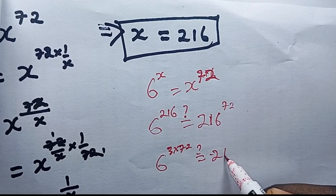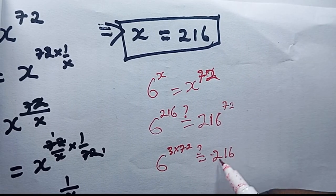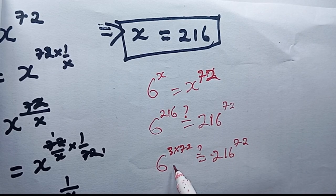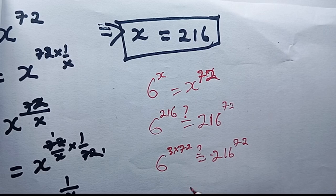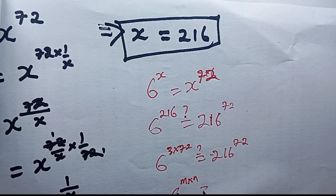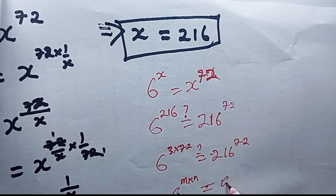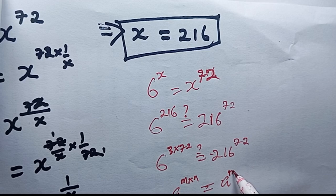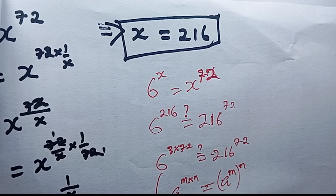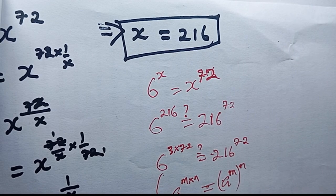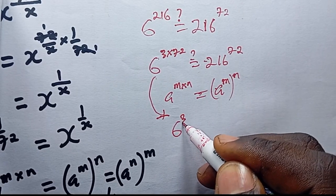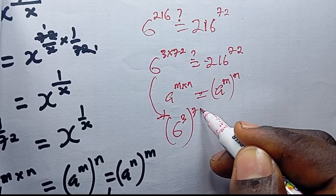If we decide to simplify the left hand side, I can write 216 as 3 multiplied by 72, since I have 72 right here. I want to find out whether this will give me 216 power 72. Using the rule of indices, when you have e power m times n, you can write this as e power m bracket power n.